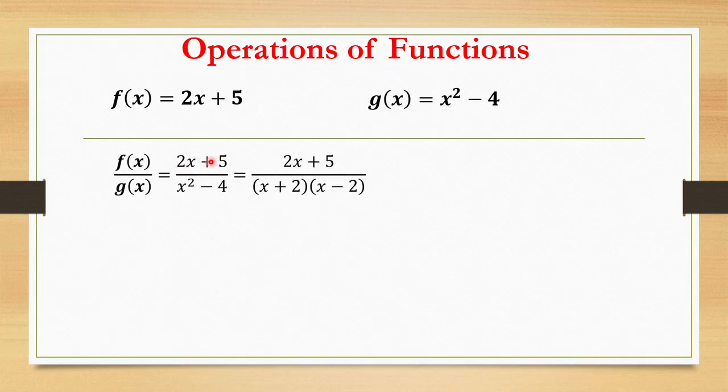Next for division, 2x plus 5 over x squared minus 4. We know we can factor this because this is a perfect square, so x plus 2 times x minus 2, because this is negative and the factor of 4 is 2. So (2x plus 5) over ((x plus 2)(x minus 2)) will be our final answer. We cannot cancel the x because this is a different term.